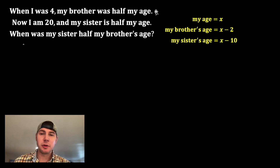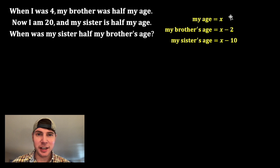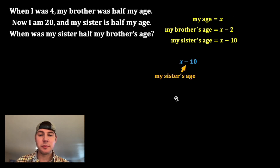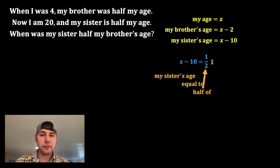So now this question asks: when was my sister half my brother's age? I want to write this as an equation with Xs so I can solve for X — when is my sister's age equal to one half of my brother's age?